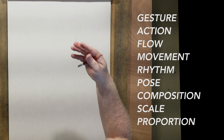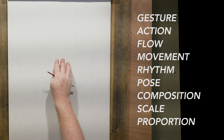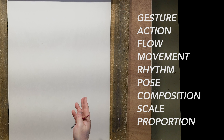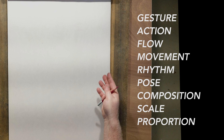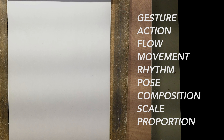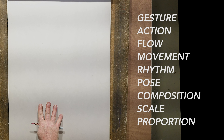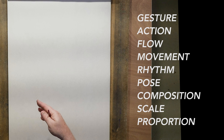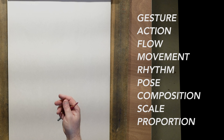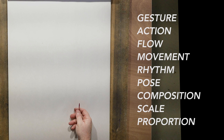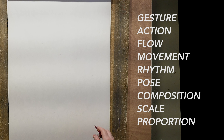Gesture can work for the figure, but it can work for anything you draw — trees, animals, dogs, chickens, rabbits, dinosaurs — anything you want to conceive of and draw in the representational world will have gesture as a backing to it. That's particularly important to know as well.